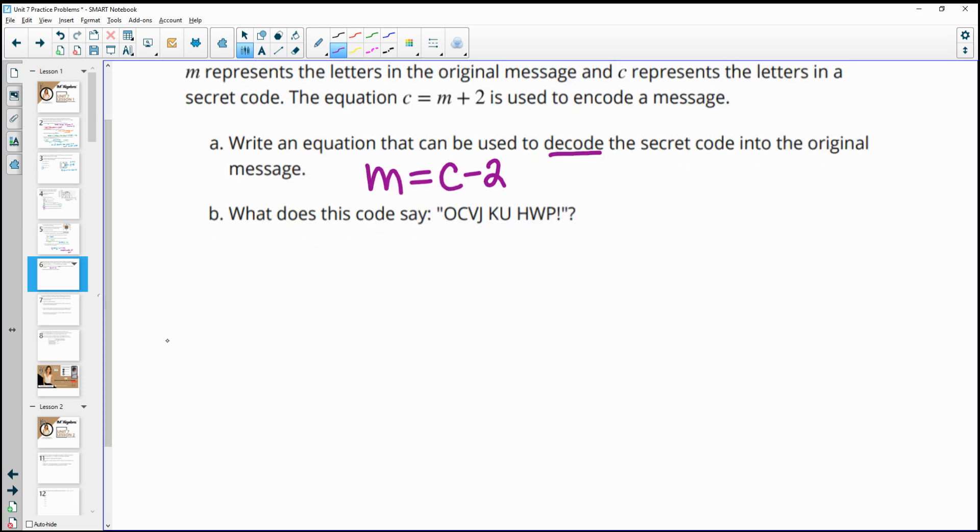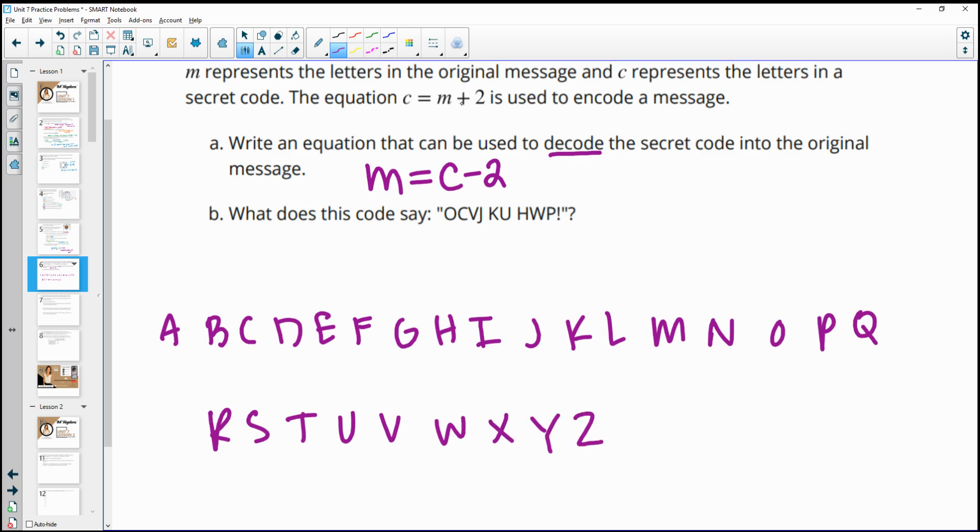And then they want us to decode this. So if we just write out the alphabet so that we can see, then we just want to look for the letter in the code and go backwards 2 from it. So here's O and we'll go backwards 2, that's M. C back 2 is A. V back 2 is T. J back 2 is H. Then our next letter starts at K back 2 is I. U back 2 is S. Next word starts at H. So we'll go H back 2 is F. W back 2 is U. And then P back 2 is N. So then the decoded word or the decoded phrase is math is fun.